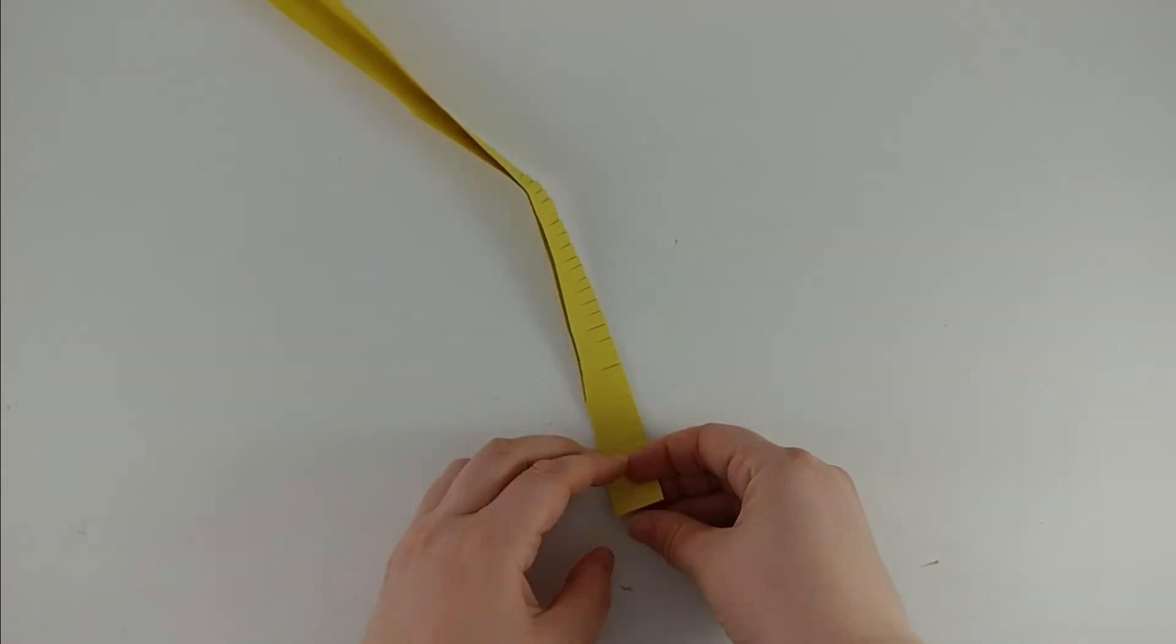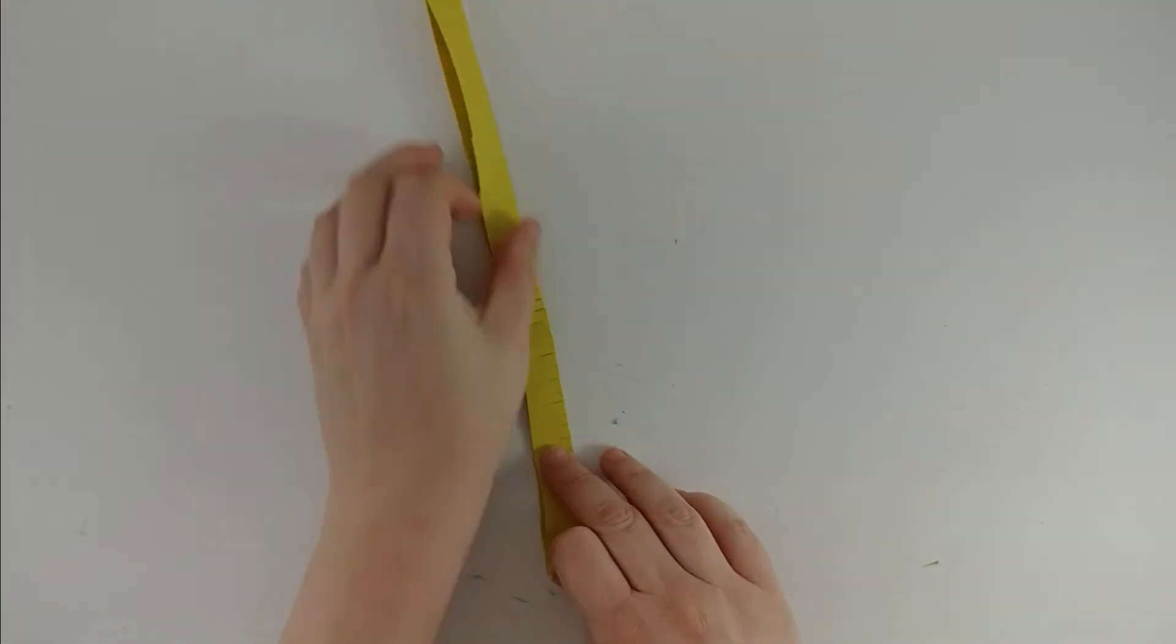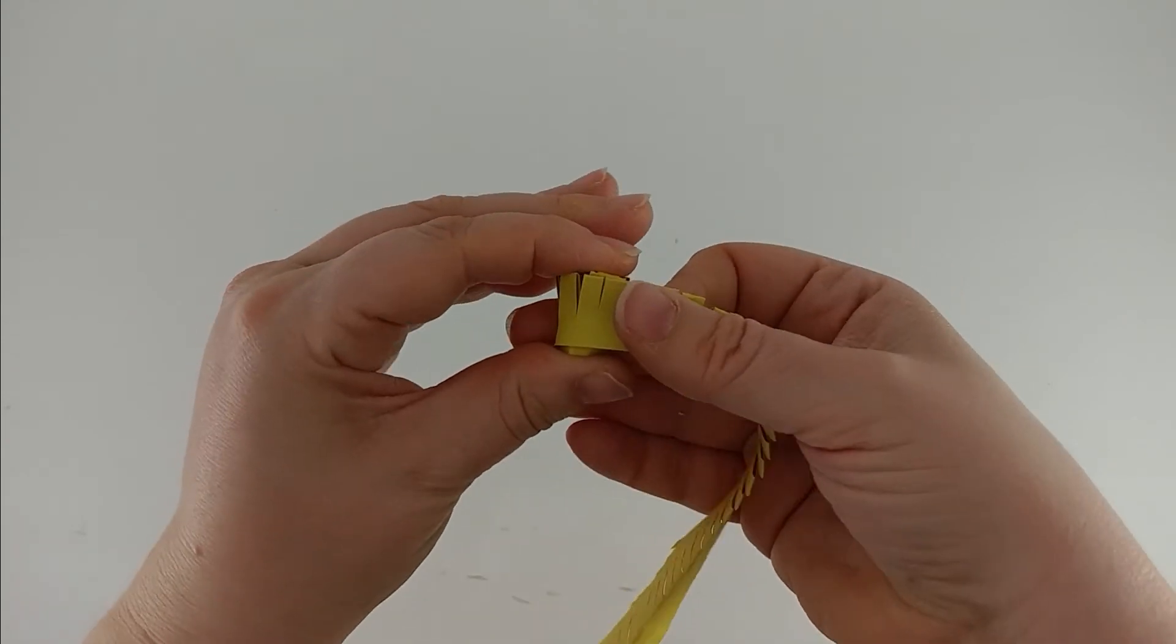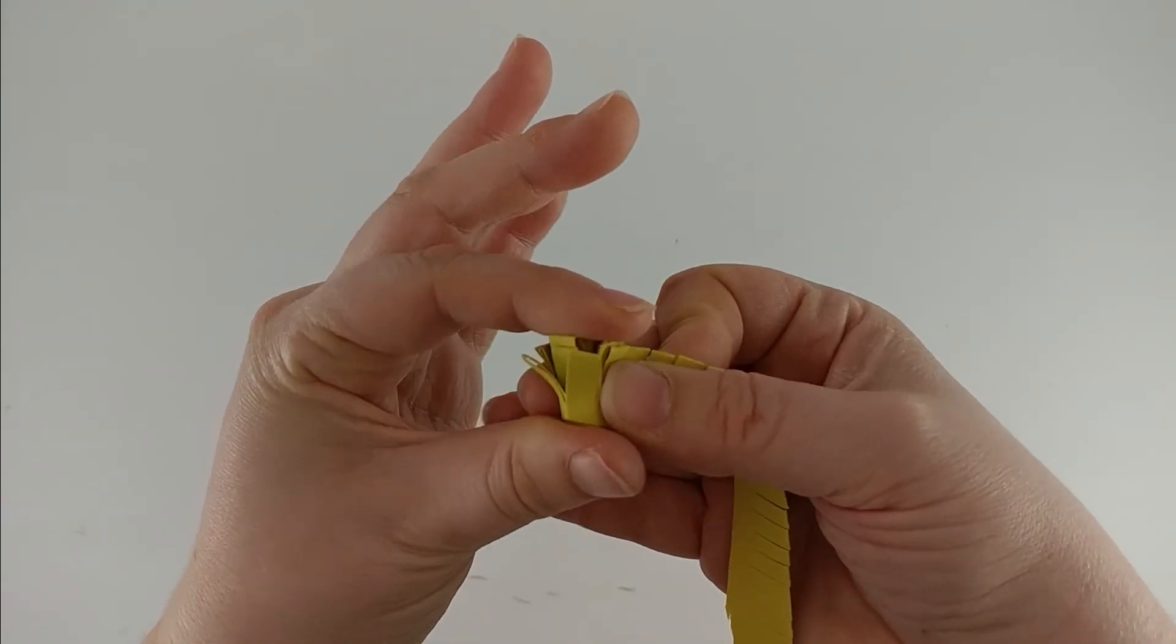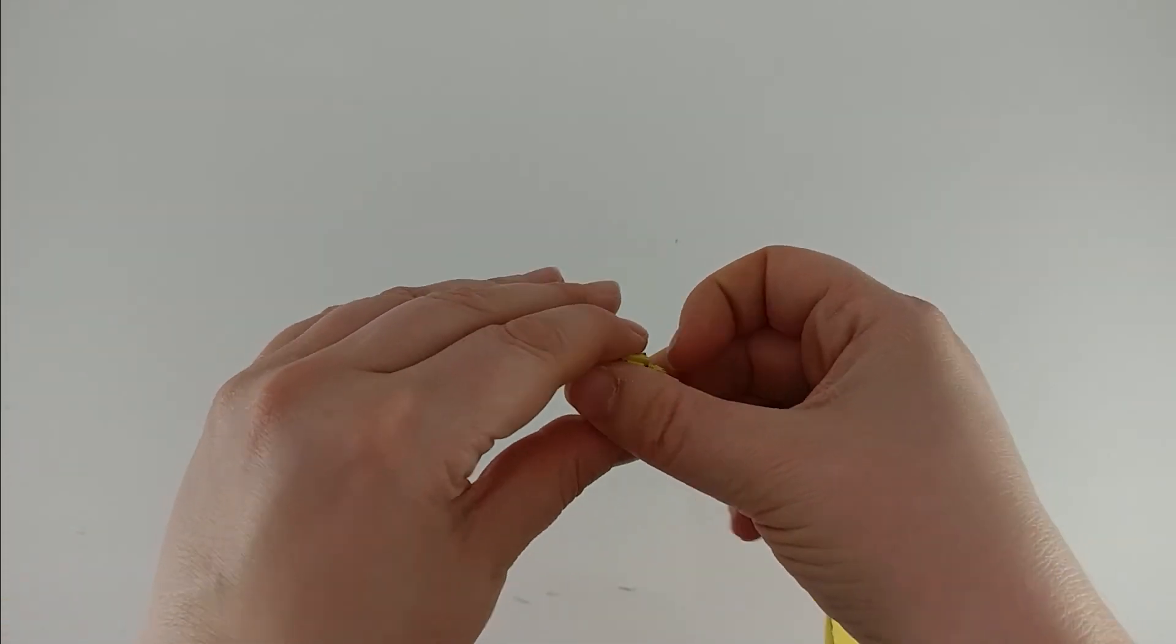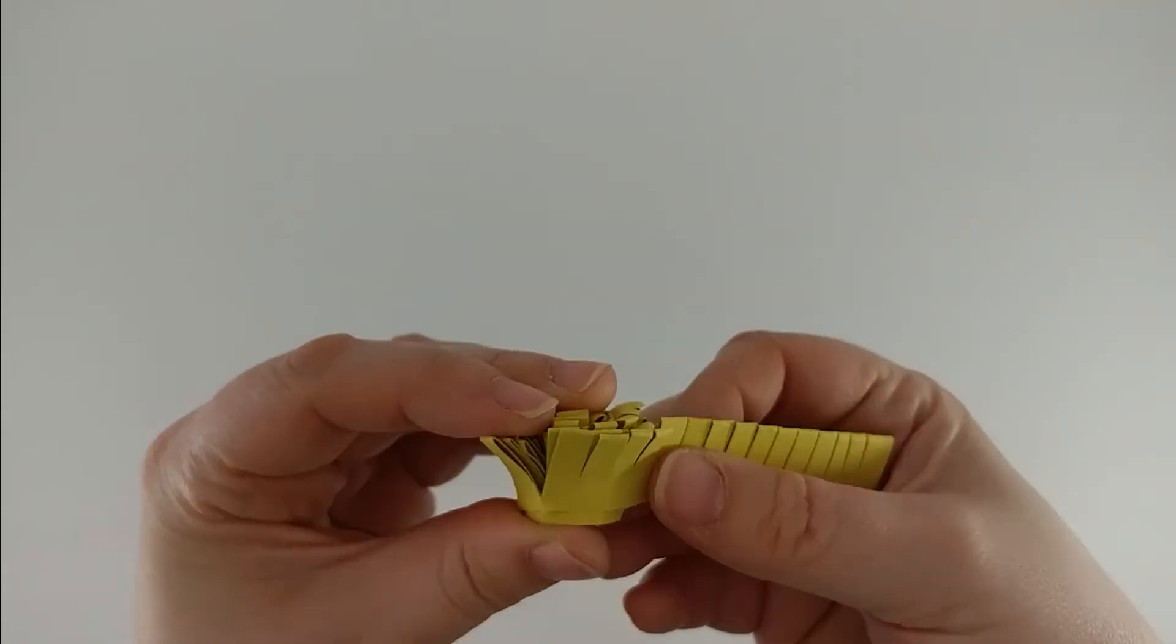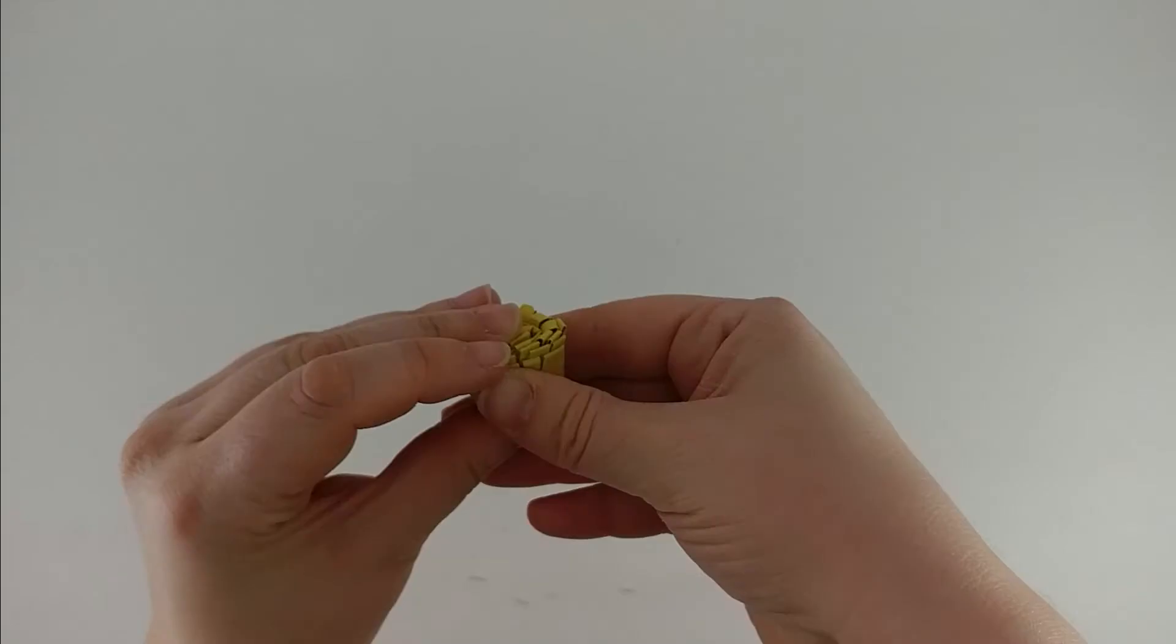Pick an end and start rolling. I'm rolling it like this because I am keeping a finger on either side so that I don't end up with kind of like a cinnamon roll effect. I don't want the inner middle poking out. I'm just going to put a little piece of tape right there.